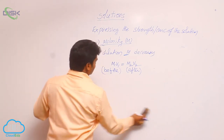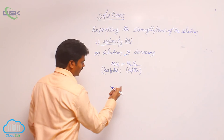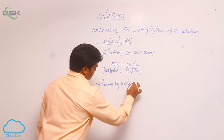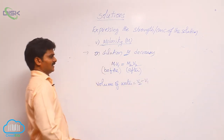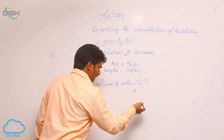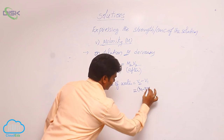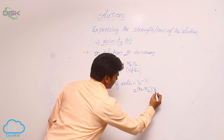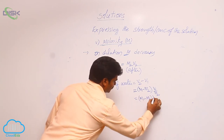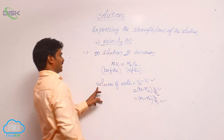There is also a direct formula to find the volume of water added during the dilution process. Volume of water added = V2 − V1. We can also use: (M1 − M2) × V1 / M2, or alternatively (M1 − M2) × V2 / M1. Using any of these three formulas, we can calculate the volume of water added.